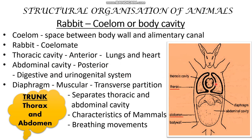In between these two cavities, you can see in the diagram a structure called the diaphragm. It acts as a partition separating the two cavities. What is the diaphragm? It is a muscular transverse partition — made up of muscles, running transversely, separating the two cavities.